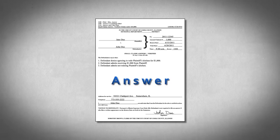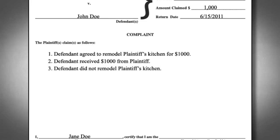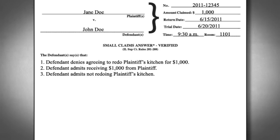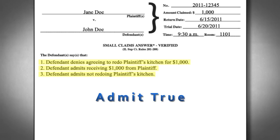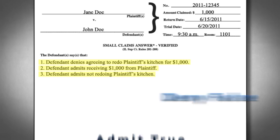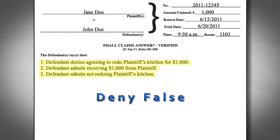The answer is your written response to the complaint. Usually, the complaint has numbered paragraphs that give the reasons why you are being sued. In your answer, you should number your paragraphs just like the complaint and either admit paragraphs that are true, deny paragraphs that are false, or say you don't know if you don't know whether a paragraph is true or not.